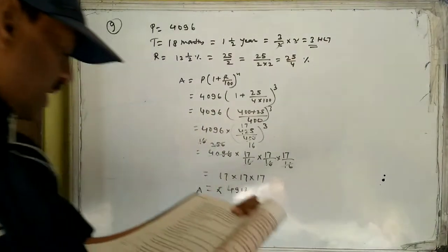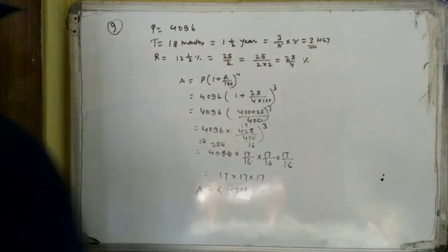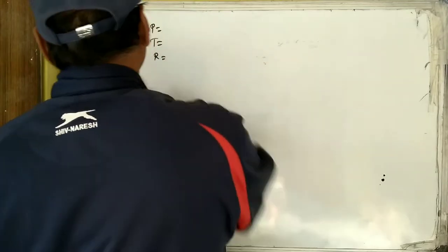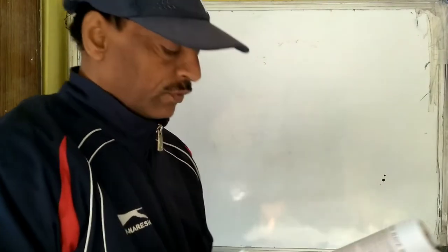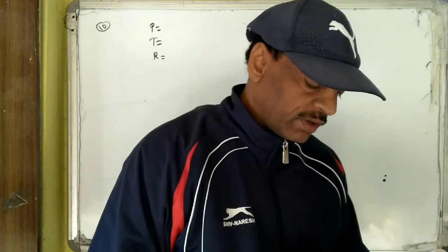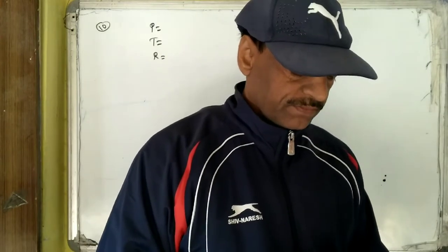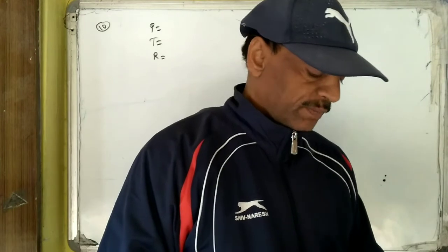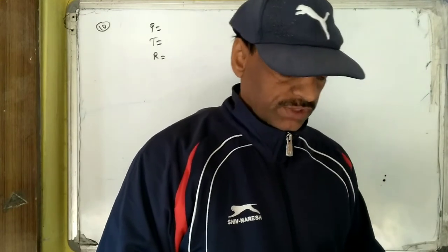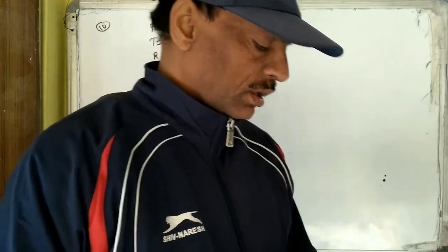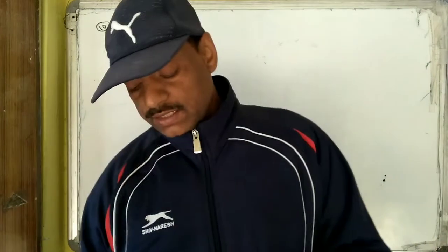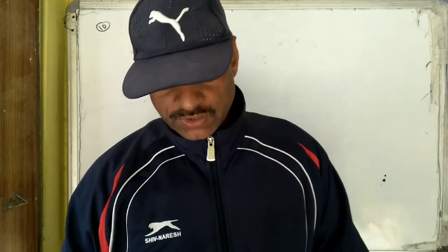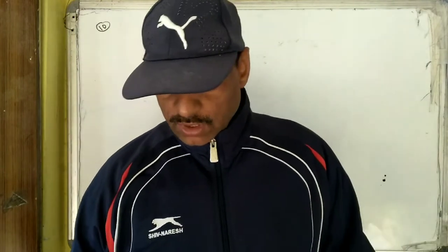Question number 10 is about the population of a place. The population increased to 54,000 in 2003 at the rate of 5% per annum. We need to find the population in 2001 — that is, 2 years before 2003. So we need to work backwards from the given population.